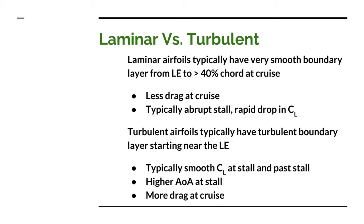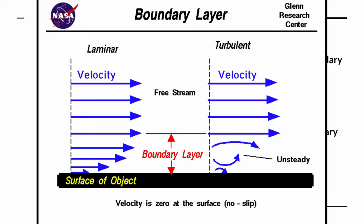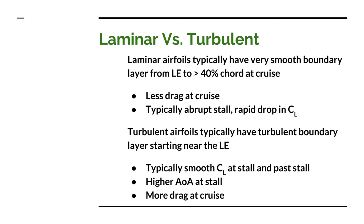A turbulent airfoil has mild eddies occurring within the boundary layer. This helps keep the boundary layer energized and prevents it from separating from the airfoil as you increase the angle of attack. So with a turbulent airfoil you can often reach a much higher angle of attack and thus a higher coefficient of lift. However, a turbulent airfoil does have slightly more drag than a laminar airfoil that is working as designed.